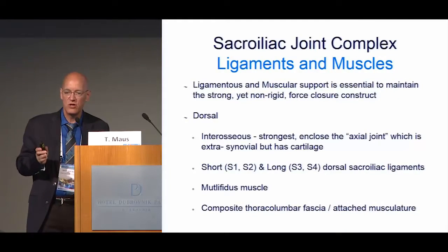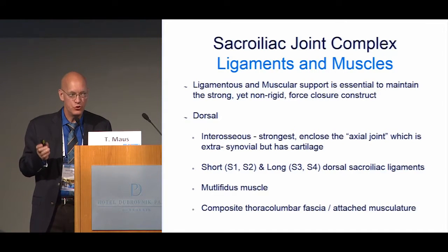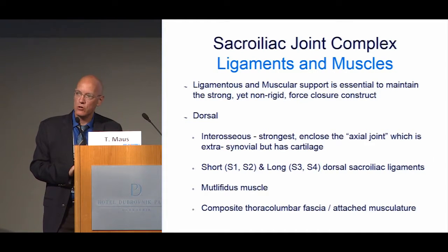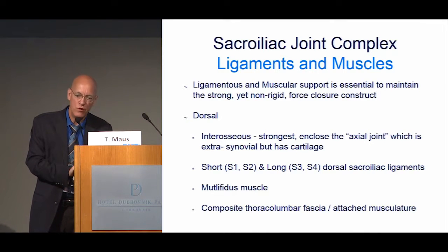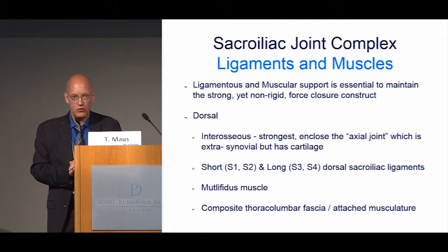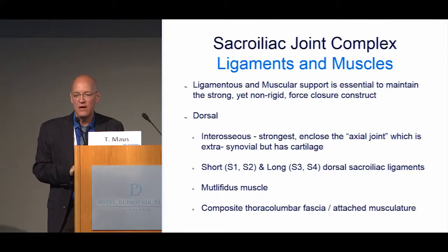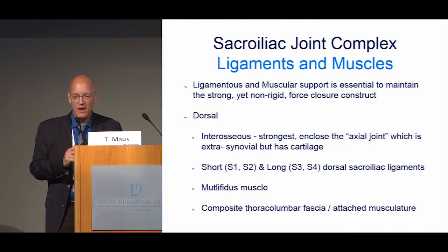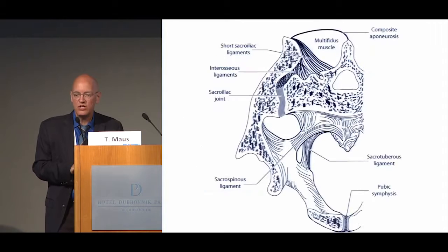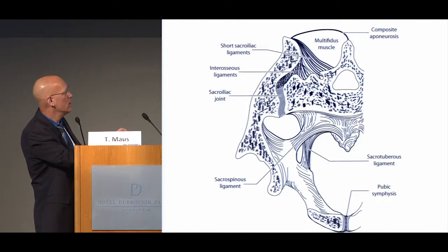As we think about this as a force closure construct, we must consider not just the articular joint, but also the surrounding muscles and ligaments — they are absolutely key and also participate in potential pain generation. The strongest ligaments are the interosseous ligaments. Only the anterior aspect of the most cephalad portion of the joint is synovial; posterior to that are all interosseous ligaments, enclosing that axial joint at S2. More superficially we see the short and then long dorsal sacroiliac ligaments, the multifidus musculature, and the composite thoracolumbar fascia.